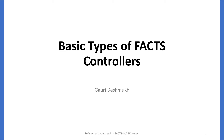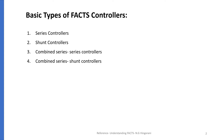Hello everyone. In this video, I will brief you about basic types of FACTS Controllers. In general, FACTS Controllers are divided into 4 categories: Series Controllers, Shunt Controllers, Combined Series-Series Controllers, and Combined Series-Shunt Controllers. We will see these one by one.